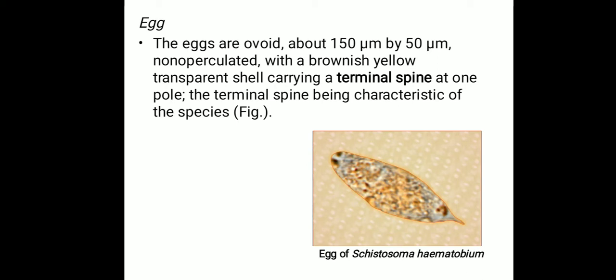Regarding the mechanism of egg expulsion, the eggs are laid usually in the small venules of the vesicle and pelvic plexus, though sometimes they are laid in the mesenteric portal system, pulmonary arterioles, and other ectopic sites. The eggs are laid one behind the other with the spine pointing posteriorly. From the venules, the eggs make their own way through the vesicle wall by the piercing action of the spine, assisted by mounting pressure within the venules and a lytic substance released by the eggs.